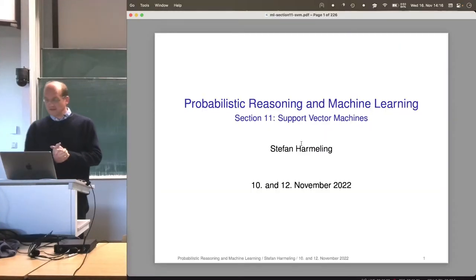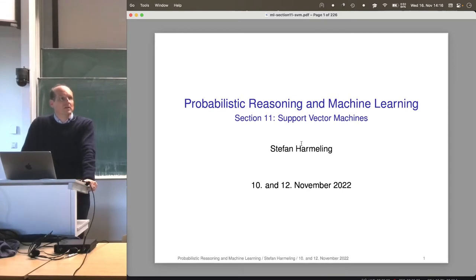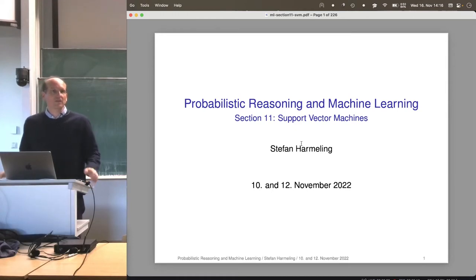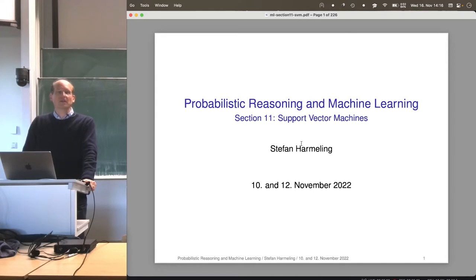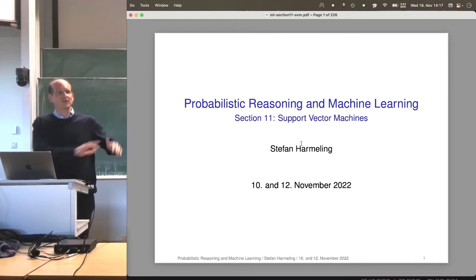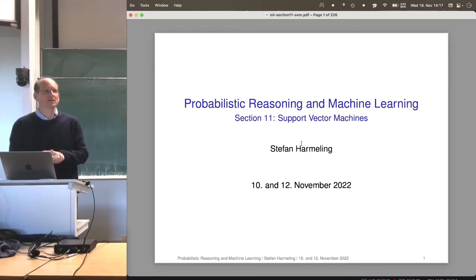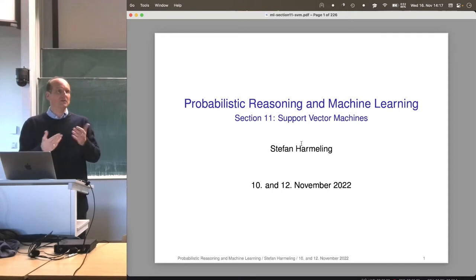Welcome everyone to our next lecture on probabilistic reasoning and machine learning. Today we continue with support vector machines. It's slightly different from all the probability stuff — it's more about mathematical optimization. However, the data for a support vector machine also comes from a probabilistic model. There is some underlying probability distribution, and it's interesting to ask where the probability distribution is in the support vector machine.